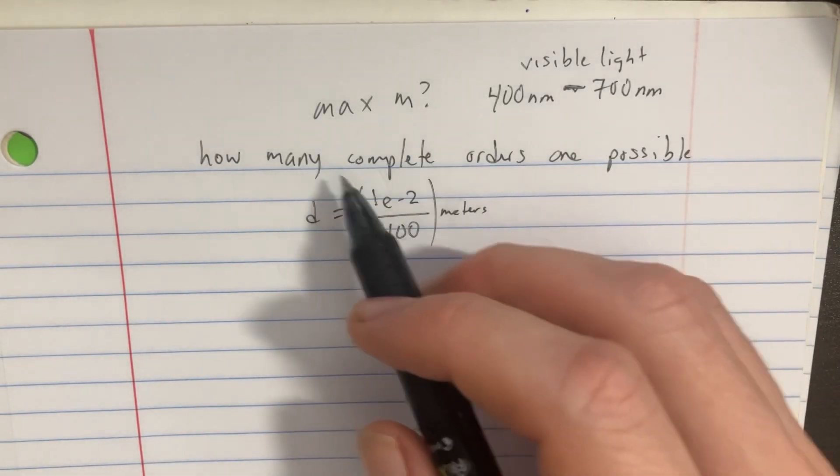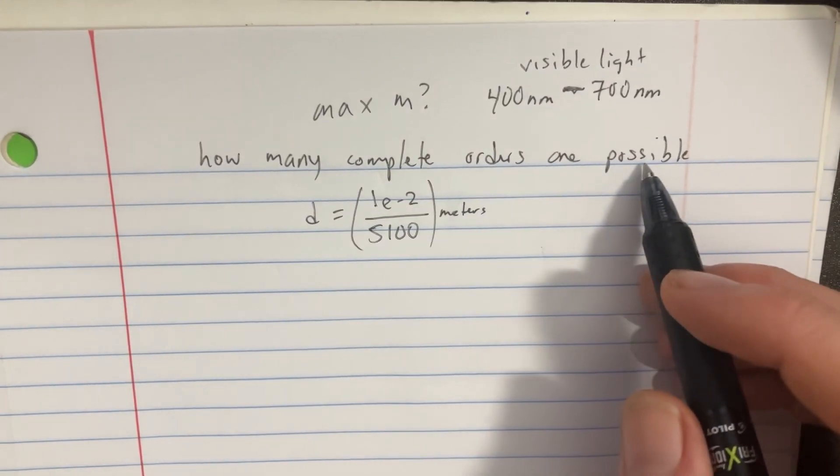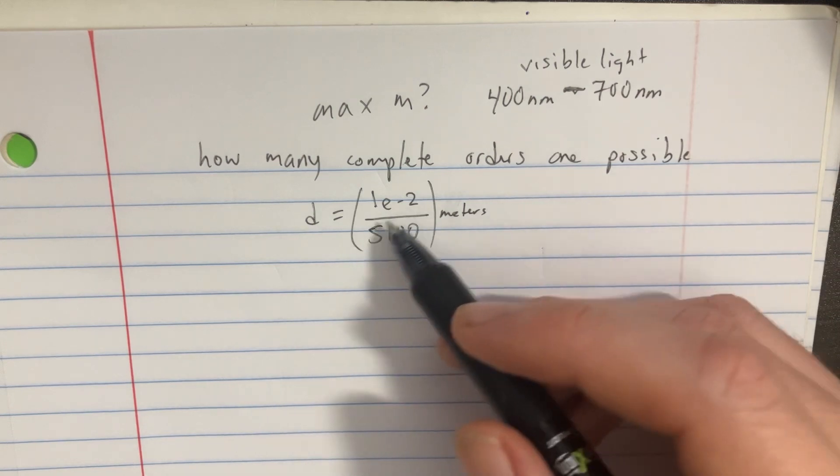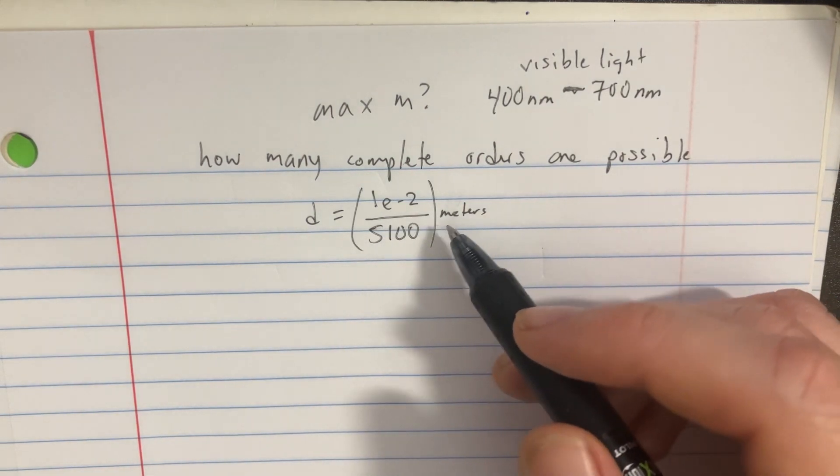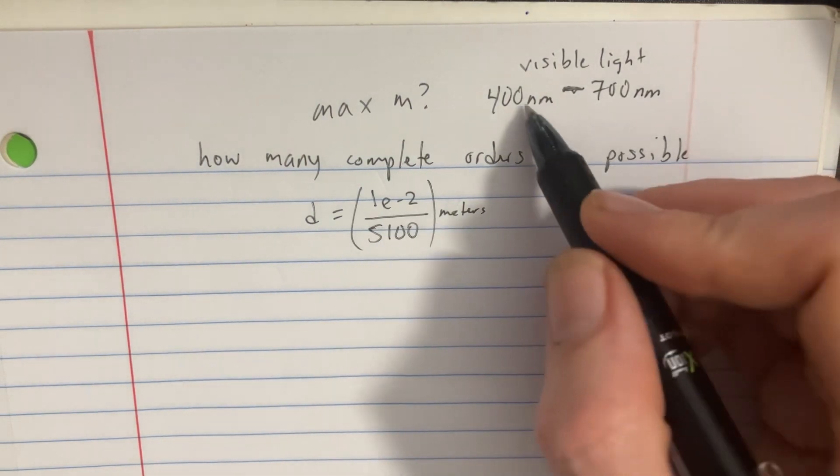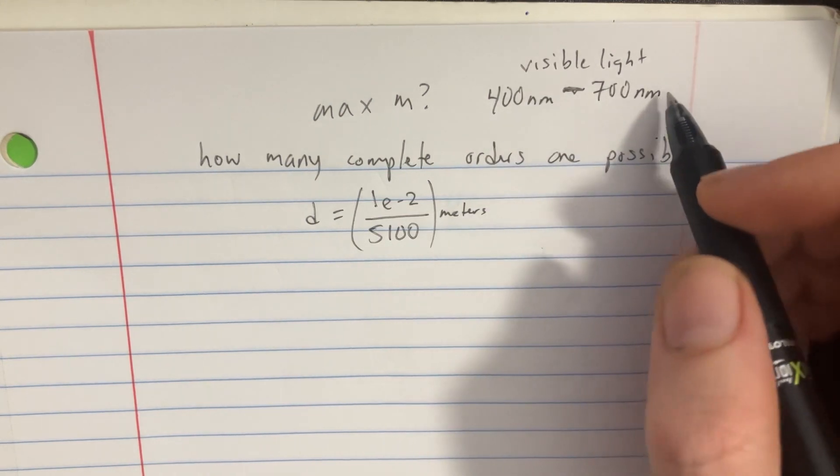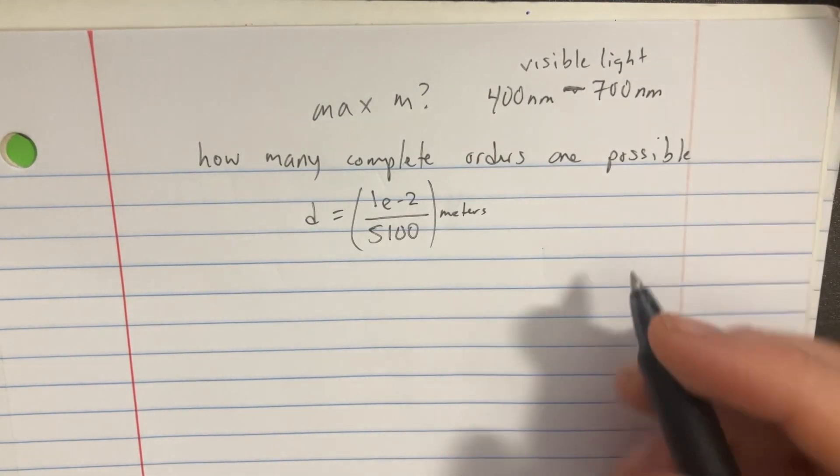We want to find the maximum M or the maximum complete orders that are possible if we're using a diffraction grating with this particular separation distance and we're using visible light spectrum. So we kind of have these ranges that we can work with.